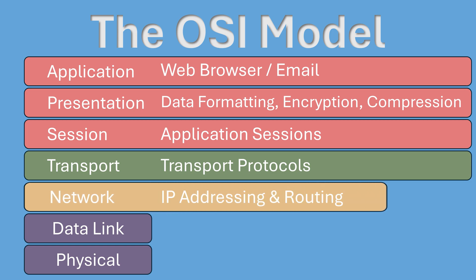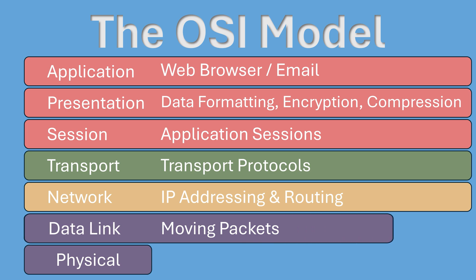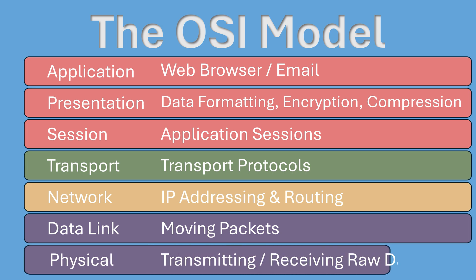The network layer is where routing happens. Routers and layer-three switches work here, using IP addresses to determine the best path for your data to travel from source to destination. The data link layer is where switches and network interface cards operate, ensuring data is correctly packaged and delivered between devices on the same network. Finally, the physical layer deals with the actual transmission of data — including cables, fiber optics, and wireless signals that carry our data.